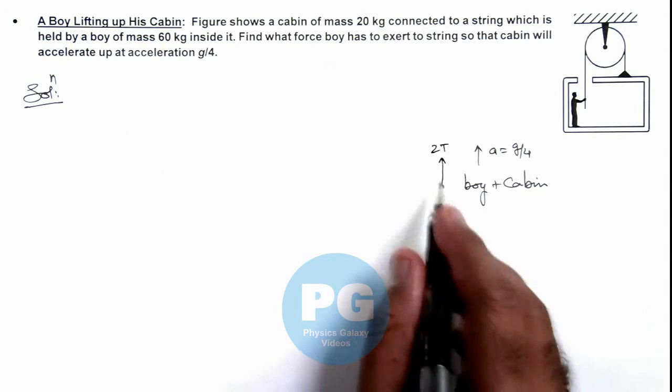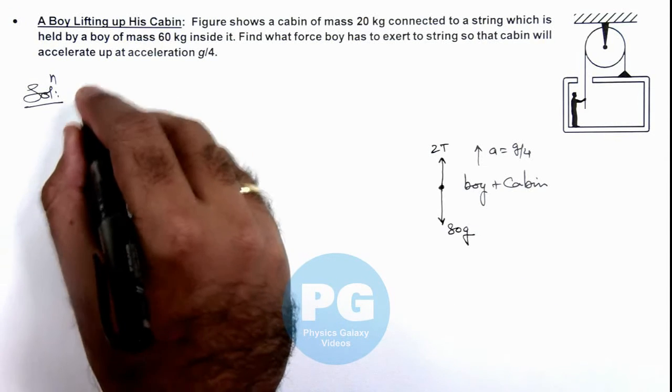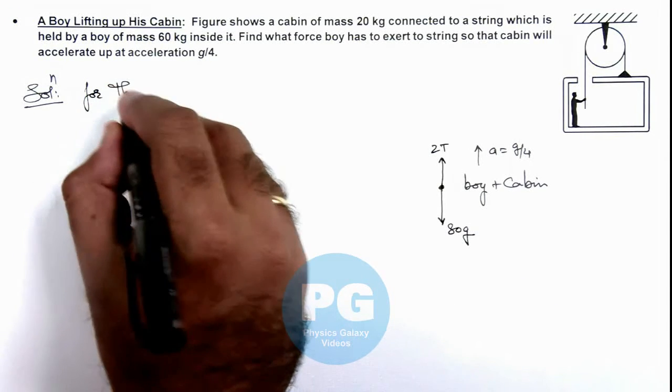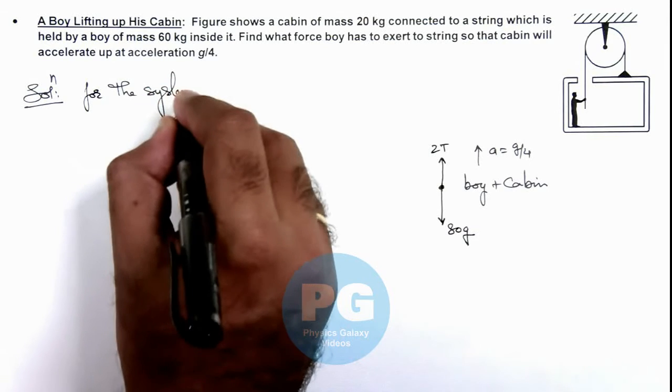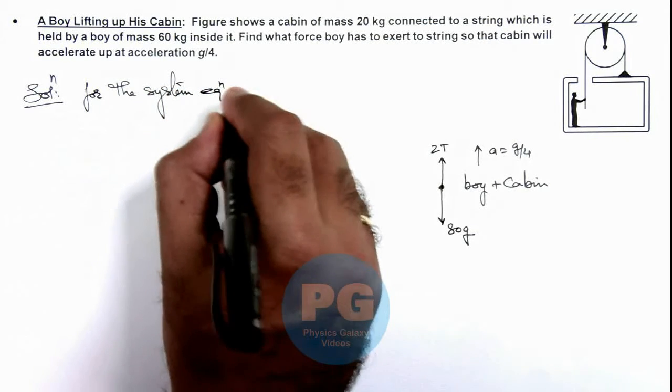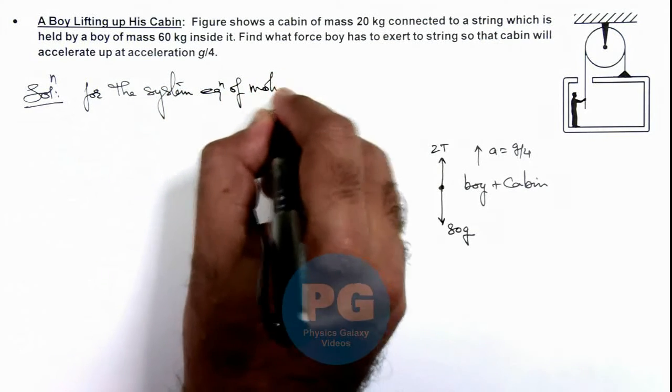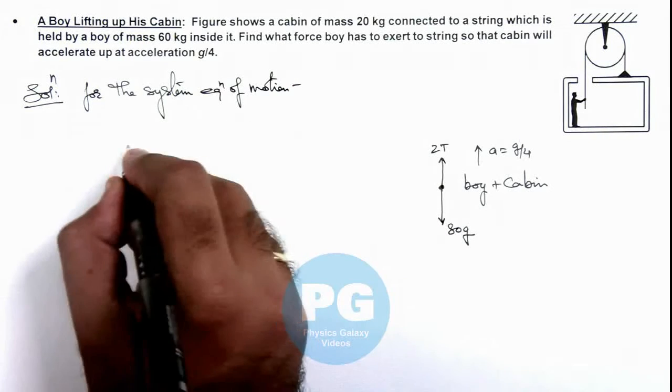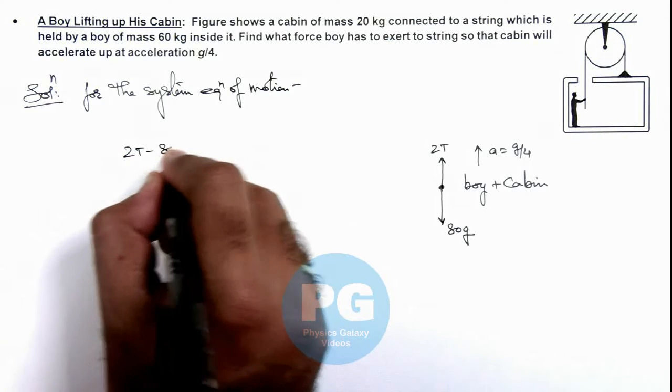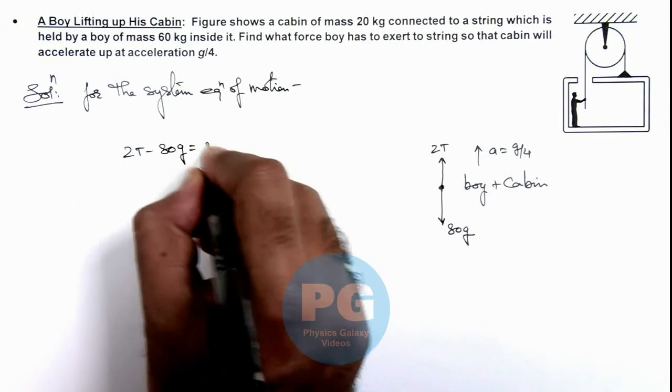So here we can directly write for the system equation of motion. If we write this can be written as 2T minus 80g is equal to 80a.